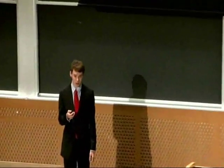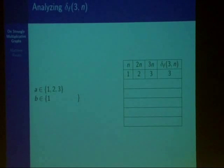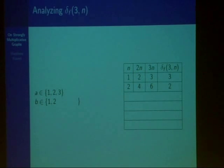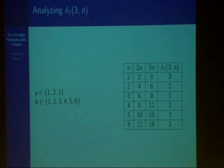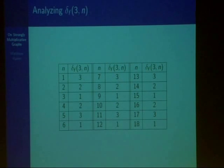Let's look at a numerical example. We're going to examine delta_f(3, n). If we add just the first possible value for b, namely one, there are three constructible products and previously there were none, so the delta value is three. Then if we add two to the set of possible values, out of the three new possible products, one has already been constructed, so the delta value is two. Continuing this process, we obtain the sequence 3, 2, 1, 2, 3, 1 for the first six values of delta_f(3, n). And if we extend further, we find that it is periodic with period six.